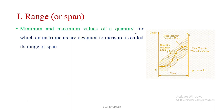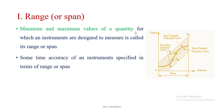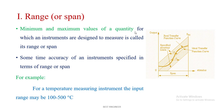Range or Span: the maximum and minimum values of the quantity for which an instrument is designed to measure is called range or span. Sometimes, the accuracy of an instrument is specified in terms of range or span. For example, for a temperature measuring instrument, the input range may be 100 degrees to 500 degrees Celsius. Looking at this picture, this is the span of the instrument and these two are the accuracy limits — the lower limit and upper limit. This one is the real function curve showing how the value goes.